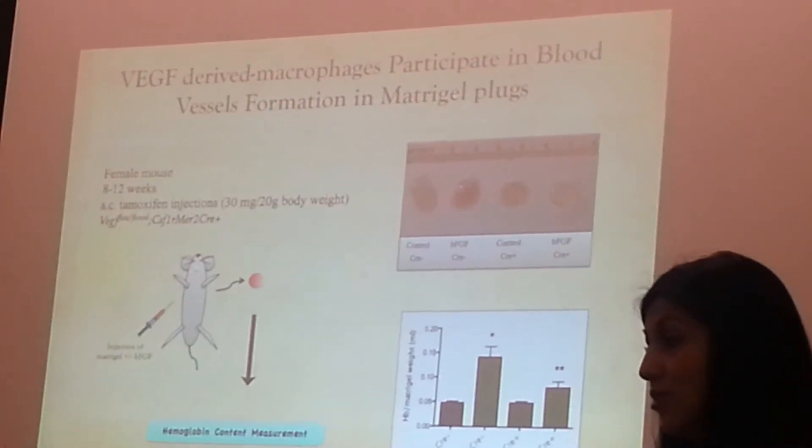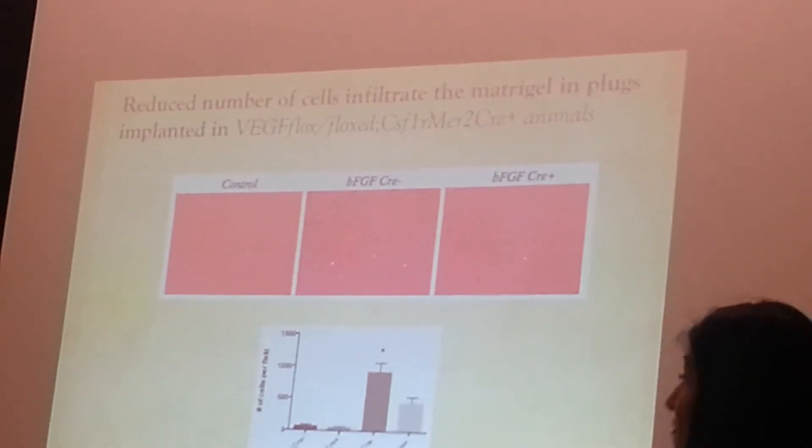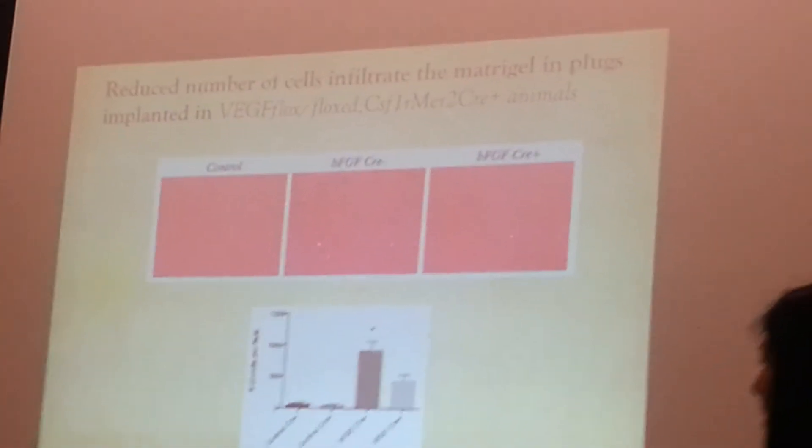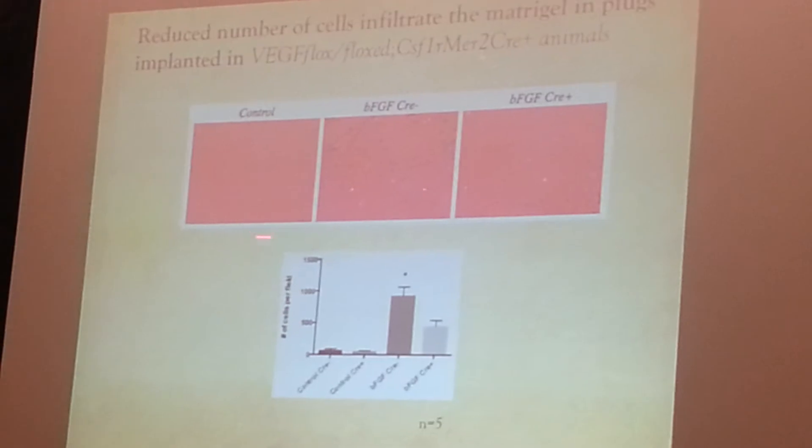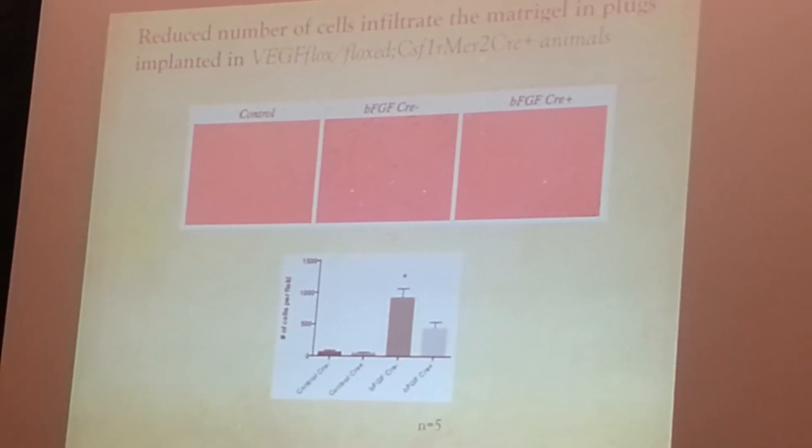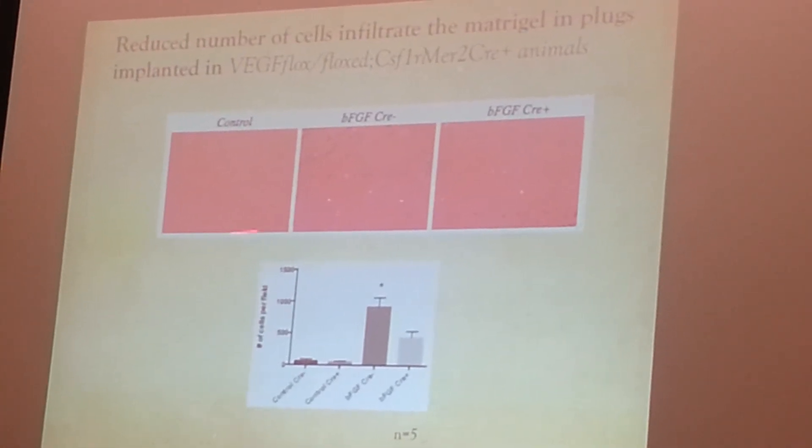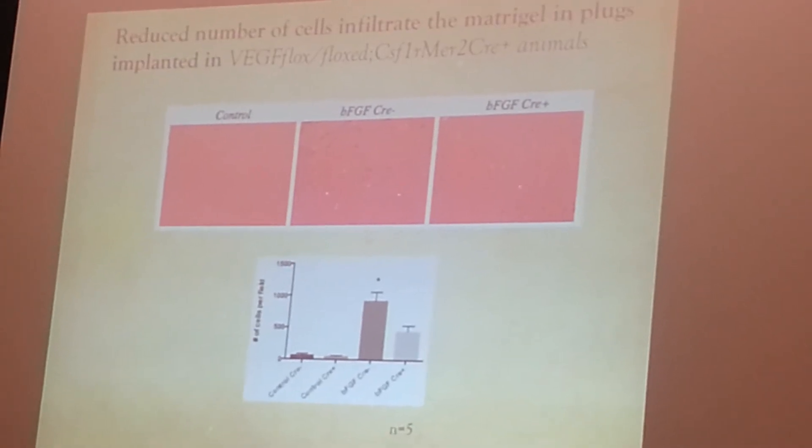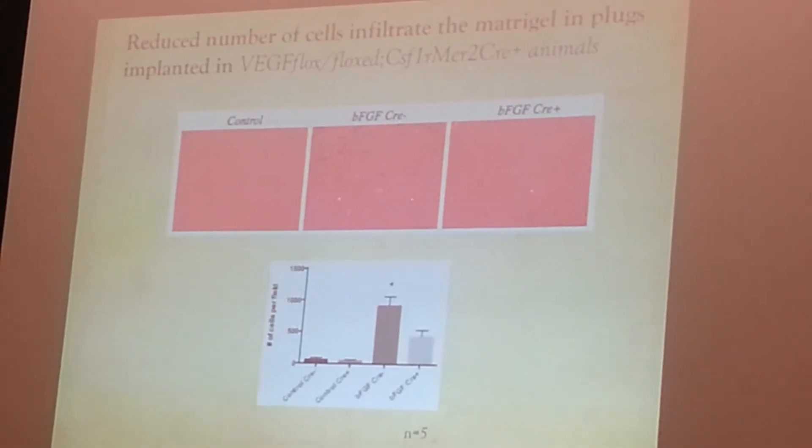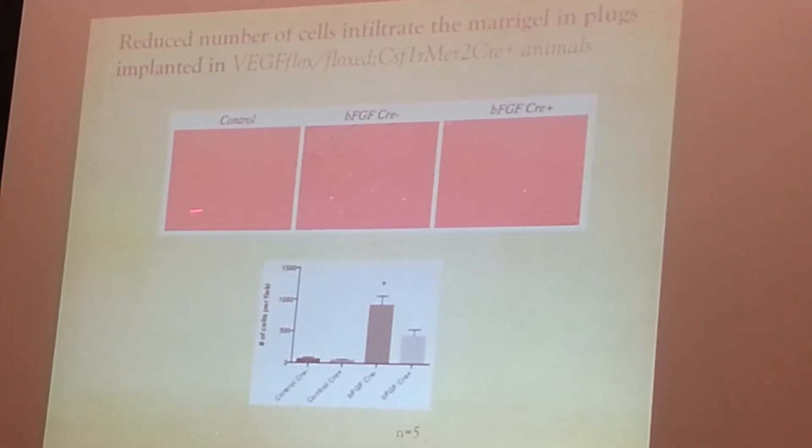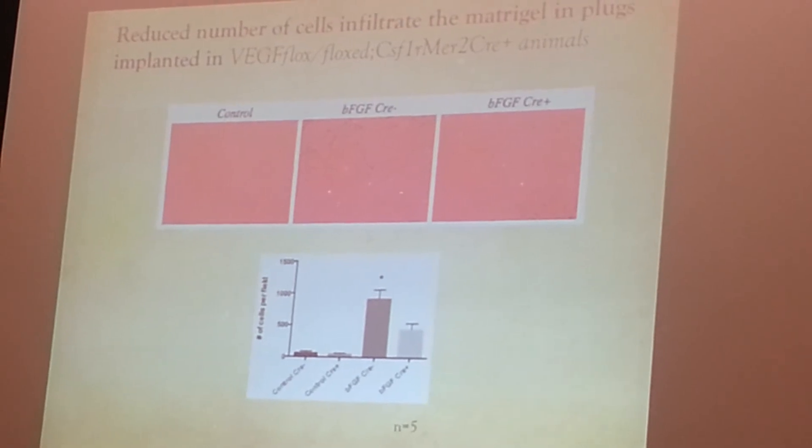Now I want to check the infiltration of cells in this plug. I inject the plug in the animal, I took the plug out, I cut it as I said before, and then I check the infiltration of cells in the plug. You see here in the control, control is of course no basic FGF, there are few cells.